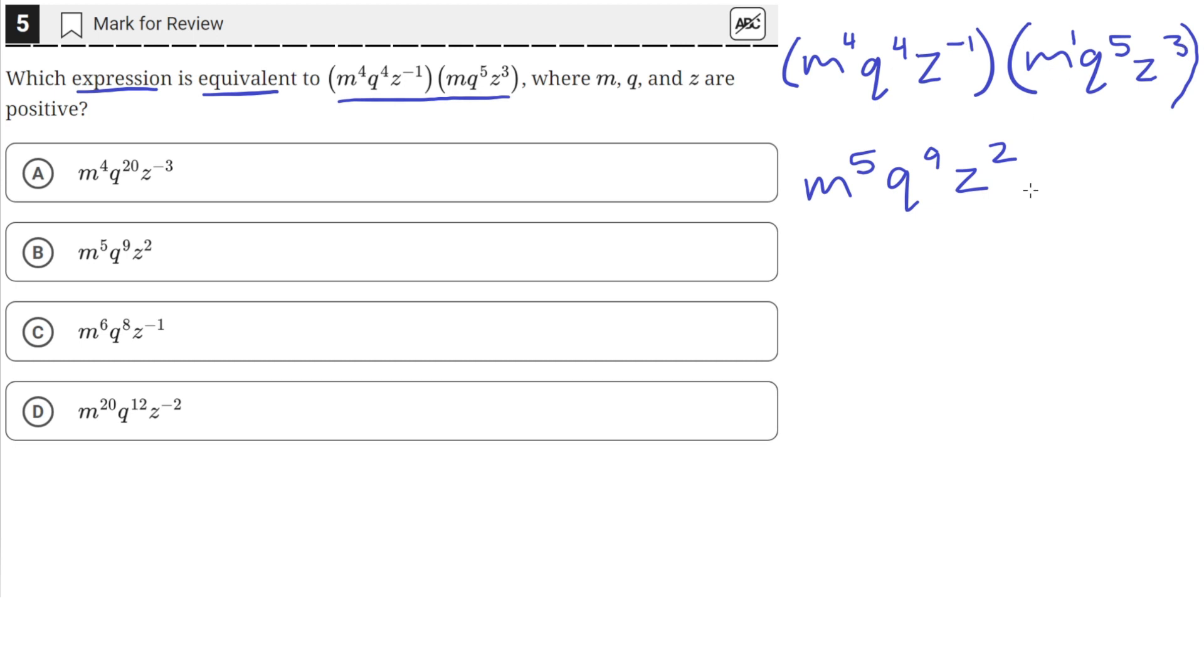The same as 3 minus 1. Okay, so our final answer is m to the fifth, q raised to the ninth, and z squared.